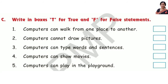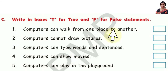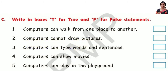Write in boxes T for true and F for false statements. Number 1: Computers can walk from one place to another — False. Number 2: Computers cannot draw pictures — False.